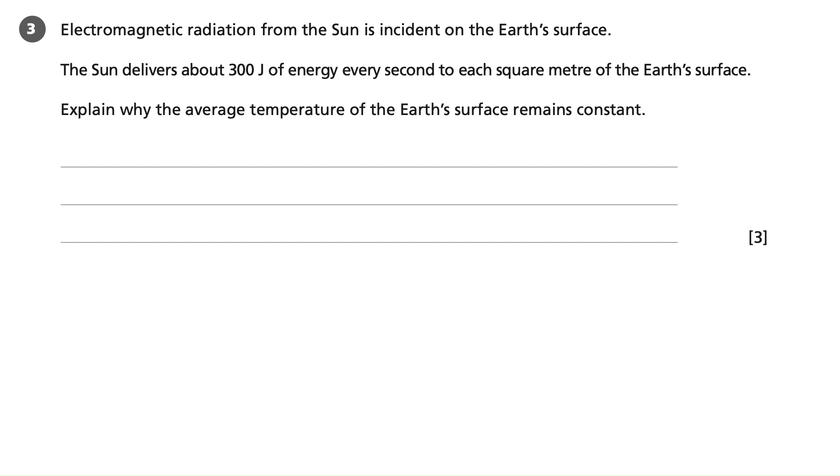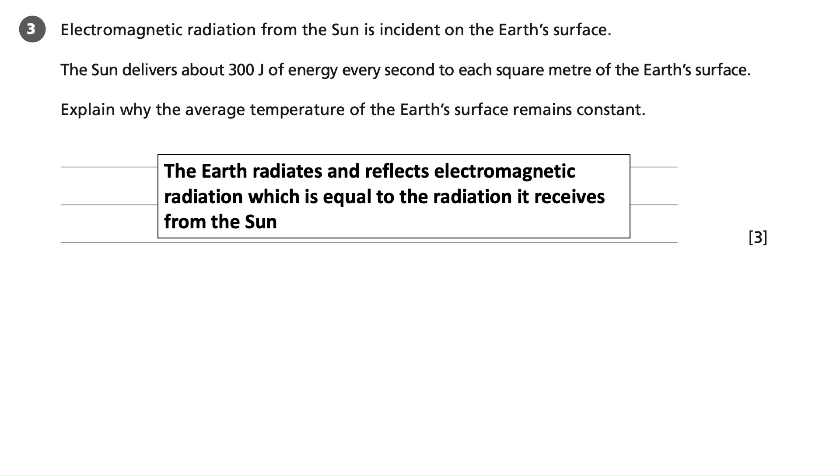So we're first going to say that the Earth radiates and reflects electromagnetic radiation. Now, that actually scores us two marks. We have one mark for talking about the radiation and one mark for the reflection.